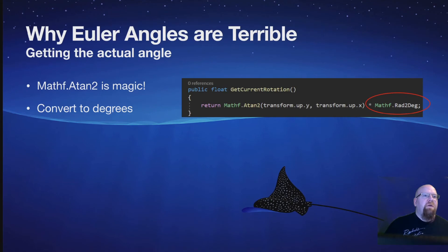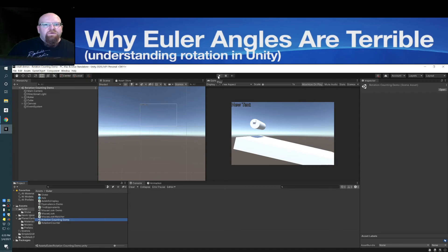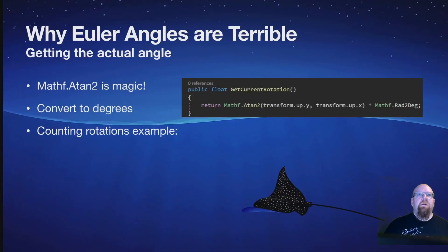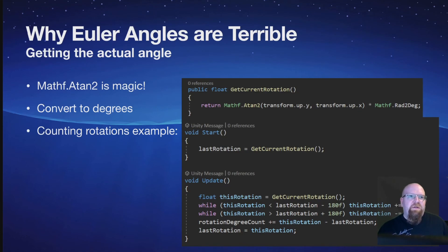One more quick demo: an example of how to count rotations on a rolling cylinder. You can use this same concept if the player is turning a steering wheel or a knob — it works the same way. As it rolls, the degrees just keep counting upward, and that's without using any Euler angles at all. We get the current rotation using the code we saw above, move that rotation to be within 360 degrees of whatever our current value is, and then we just add it.